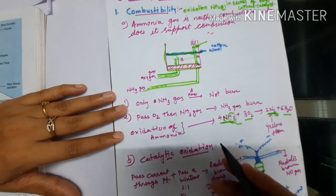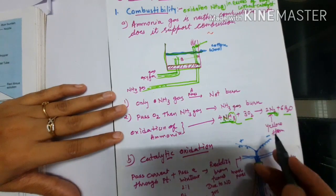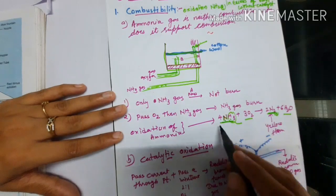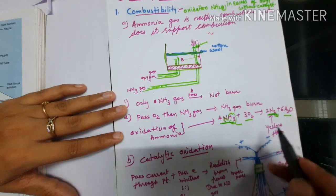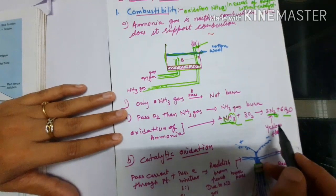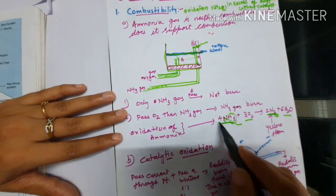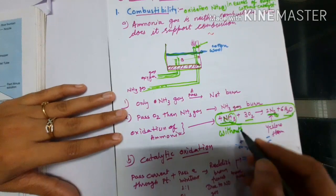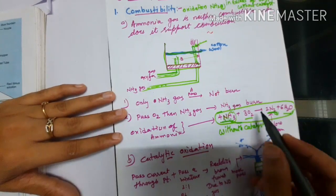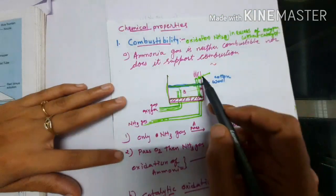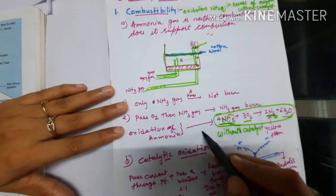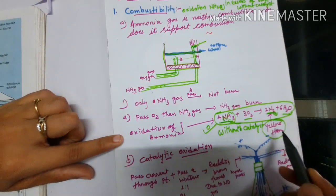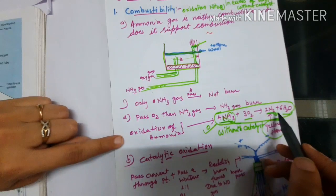In the exam, you need to know this equation. When ammonia reacts with oxygen and forms a yellow color flame, you have to write this equation. This is the oxidation reaction of ammonia without a catalyst — no catalyst is used here, only the heat from the flame at the nozzle. This is a very important reaction. You just need to remember the oxidation reaction of ammonia without catalyst, and that a yellow color flame is generated because N₂ gas is produced.